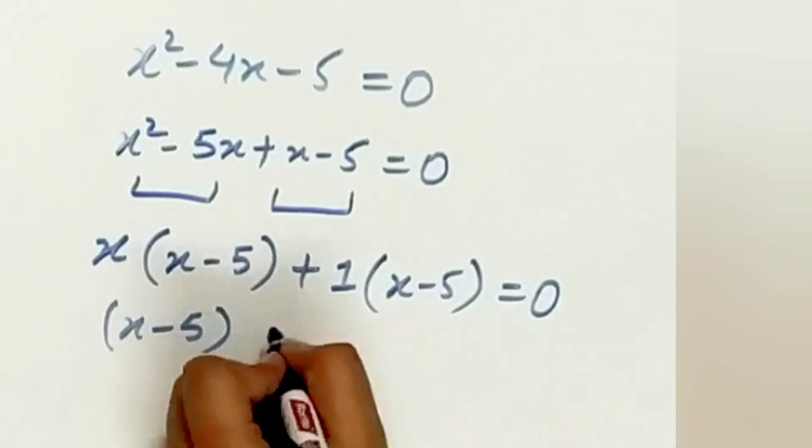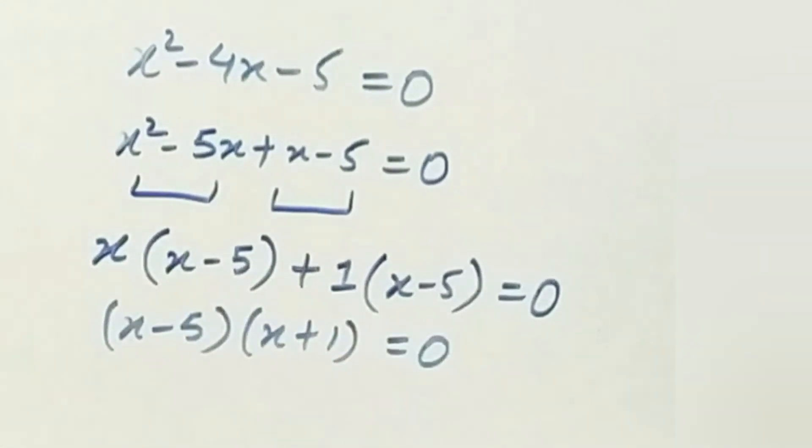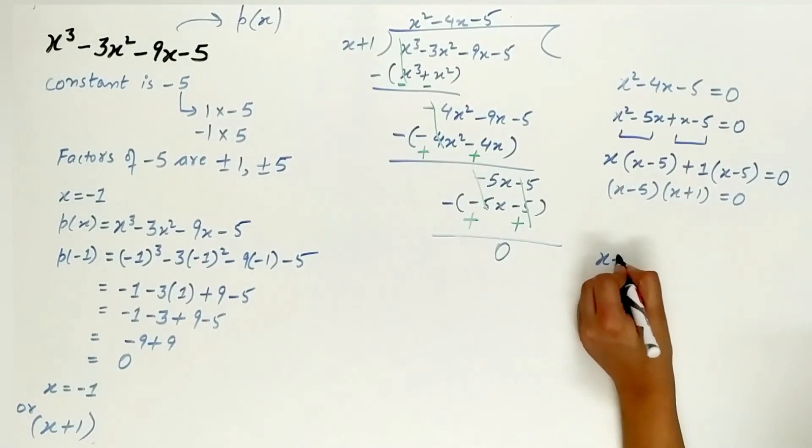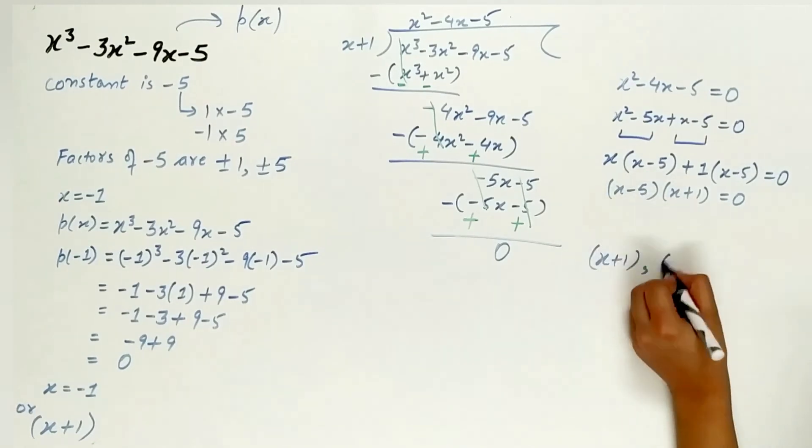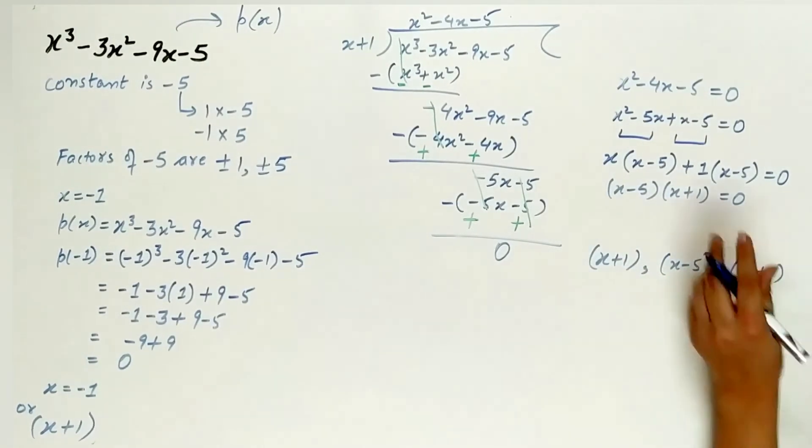Now x minus 5 is common in both the terms, so write the remaining terms. The remaining terms are x plus 1 equal to 0. So the factors of p(x) are x plus 1, x minus 5, and x plus 1.